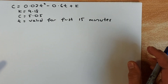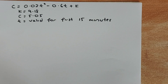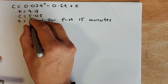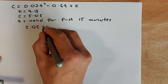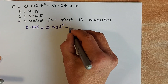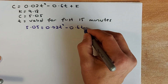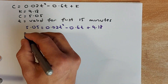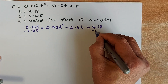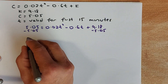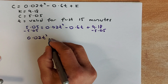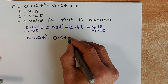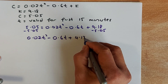The next question is a merit question. You are given that c equals 5.05 and k is 9.18, and t is only valid for the first 15 minutes. The first thing you do is substitute in the values: 5.05 equals 0.02t squared minus 0.60, and your k was 9.18. Rearrange by subtracting 5.05 on both sides — because in a quadratic equation you must make it 0. The new equation will look like: 0.02t squared minus 0.60 plus 4.13 equals 0.